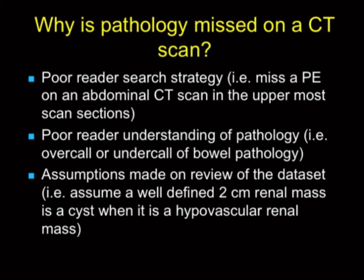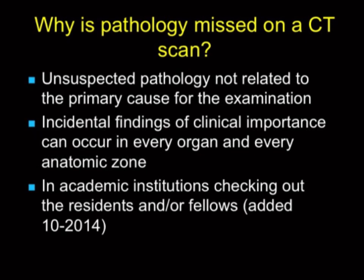We read the requisitions, and sometimes we focus on them so much that unsuspected pathology is missed because we're only looking at what the requisition tells us. I'm not saying don't look at the requisition — it's important to get clinical information — but you need to read the study twice: look at the entire study without the history, then look again with the specific findings. Incidental findings can occur in every organ and anatomic zone, and they're often missed. Remember, the older the patient, the more likely there's an important incidental finding.